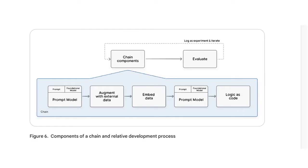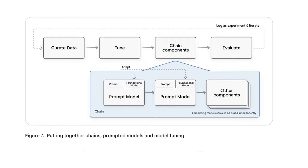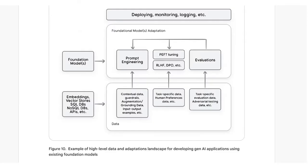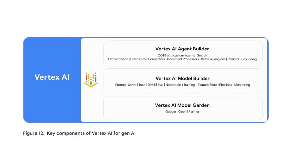As we move to the deployment phase, the white paper addresses essential aspects like version control, continuous integration and delivery for Gen AI systems. It also covers infrastructure validation, model compression, and optimization techniques, which are critical for maintaining performance while deploying large models.